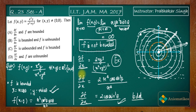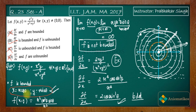So ∂f/∂x is bounded and f is not bounded. Therefore the answer to the problem is option B, and all other remaining options are false. If you know this polar substitution, you can solve this problem easily. If you have any doubts, ask in the comment section or join our WhatsApp and Telegram groups — links are given in the description. Thank you.